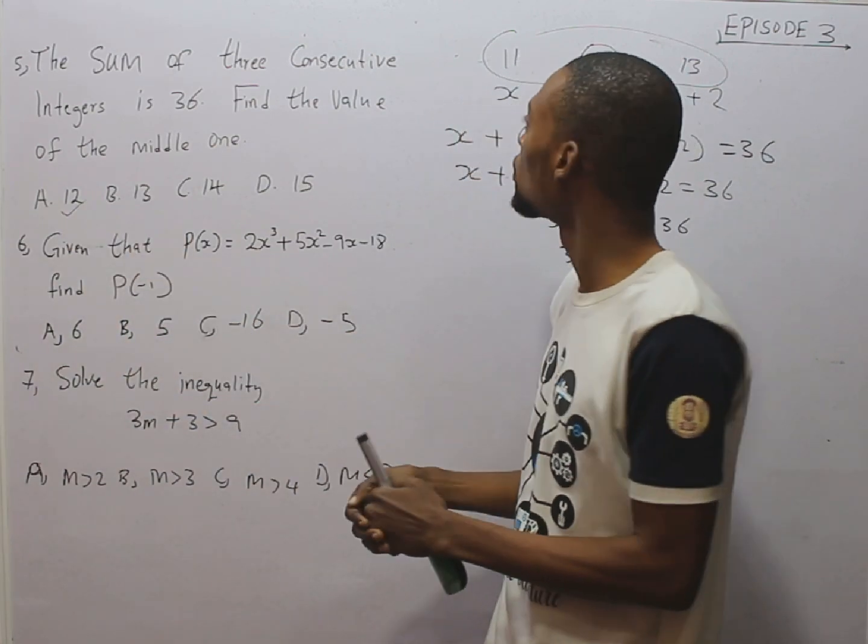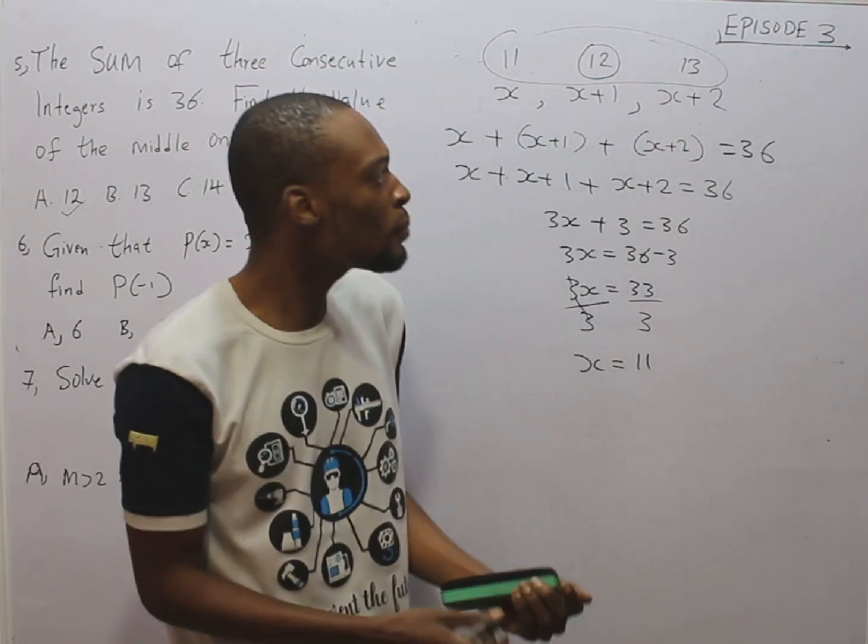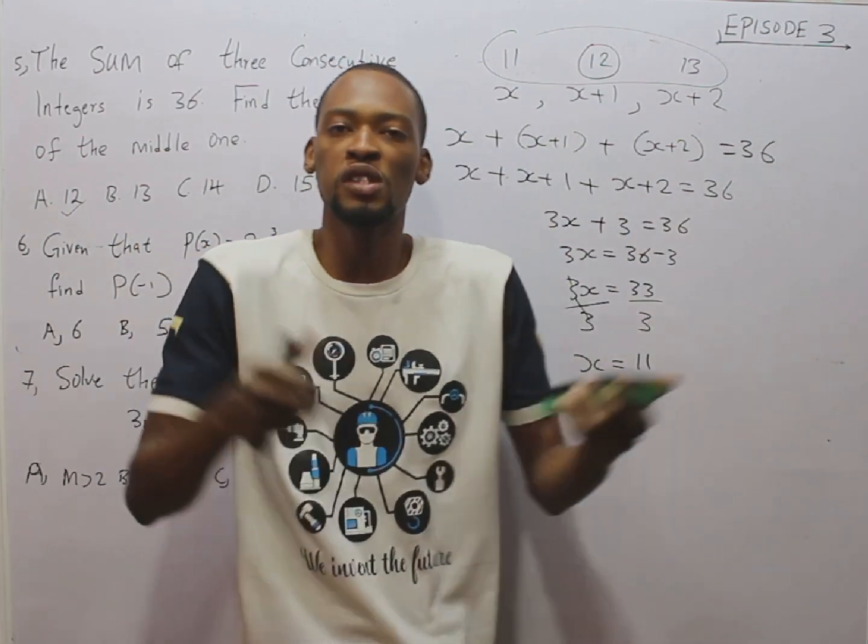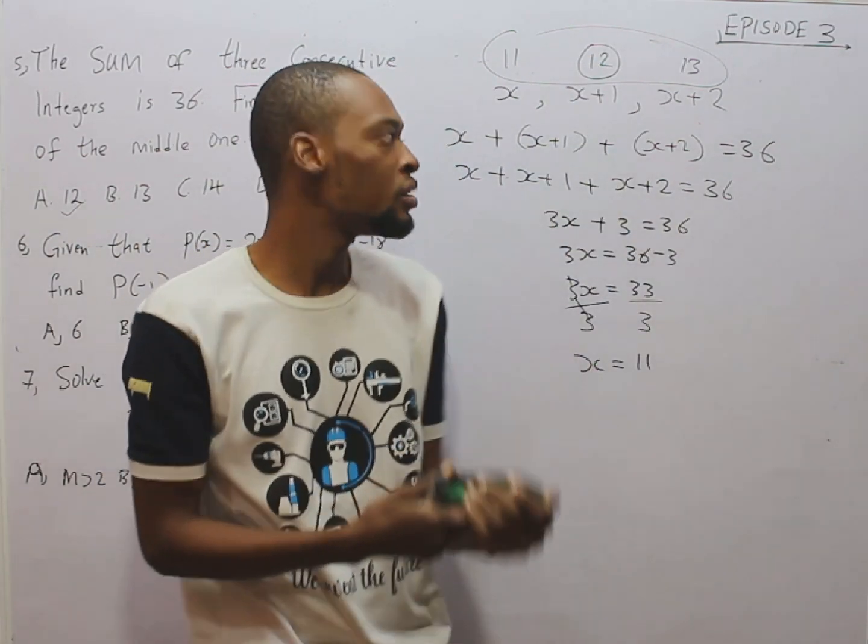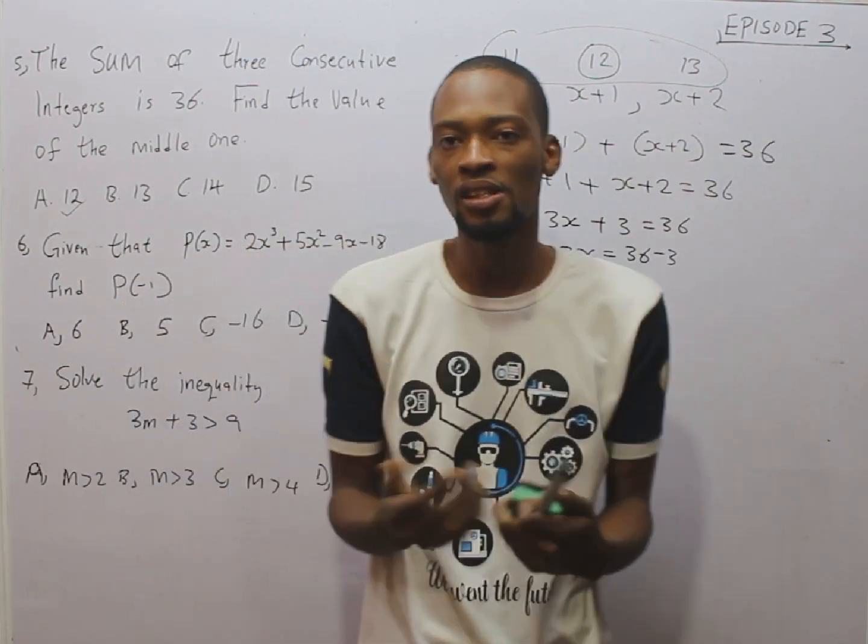What if you are asked to look for the sum of the first two numbers? The sum of the first two integers is 11 plus 12. What if you are asked to look for the biggest one? The biggest one is 13. So, questions can come in any way.